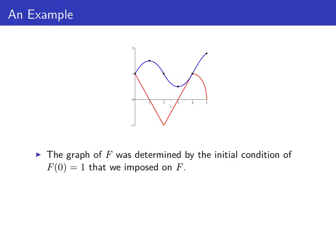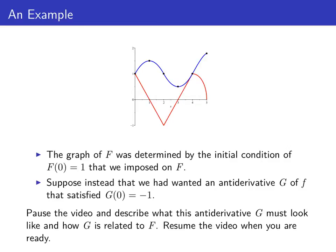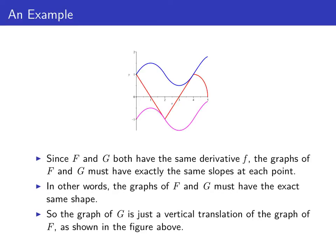Now, this graph of big F was determined by the initial condition that big F of 0 equals 1. Suppose we wanted a different antiderivative of little f that went through the point (0, negative 1) — we'll call that antiderivative big G. Big F and big G both have the same derivative little f, which means they have the same slopes at the same points. So the graphs of big F and big G have the exact same shape — big G is just a vertical translation of big F, shifted down two units so that it passes through (0, negative 1). Any other antiderivative of little f is going to be a vertical translation of one of these graphs.